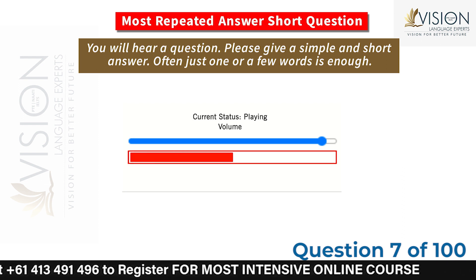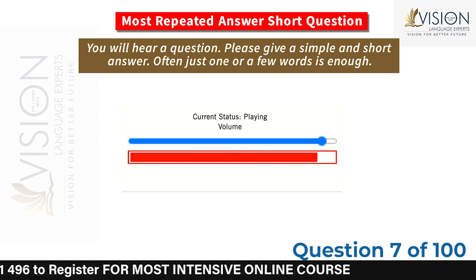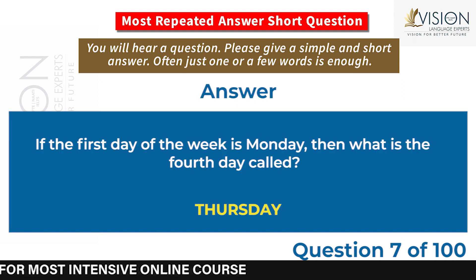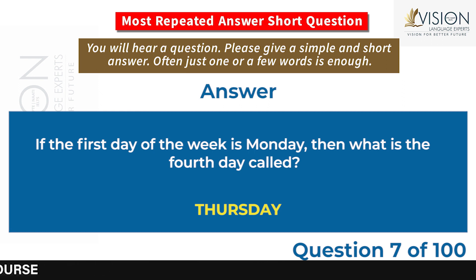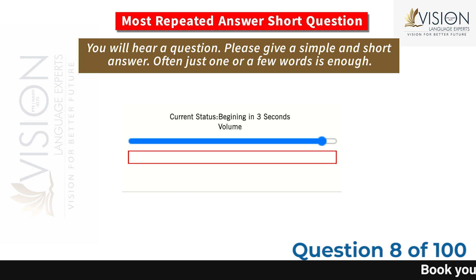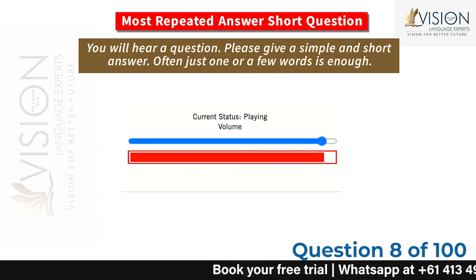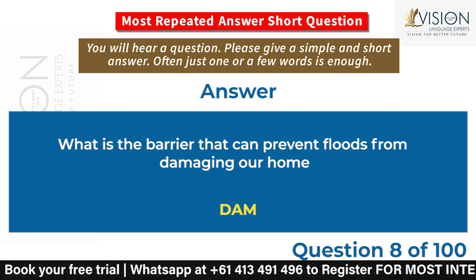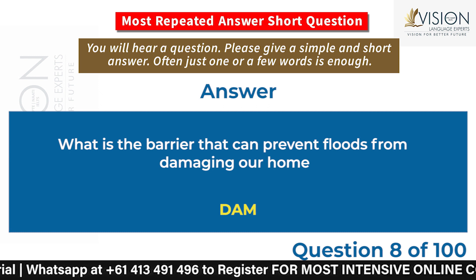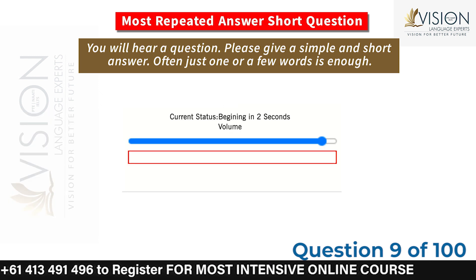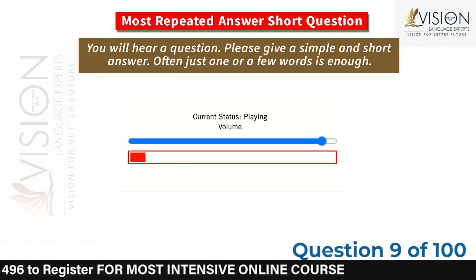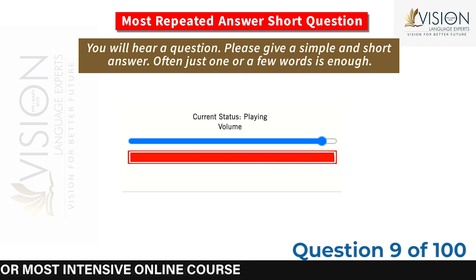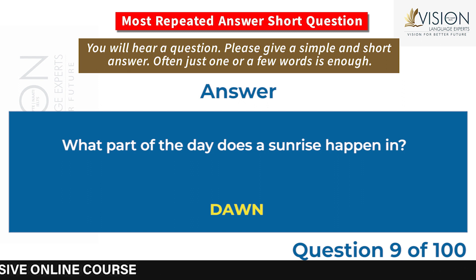If the first day of the week is Monday, then what is the fourth day called? Thursday. What is the barrier that can prevent floods from damaging our homes? Dam. What part of the day does a sunrise happen in? Dawn.